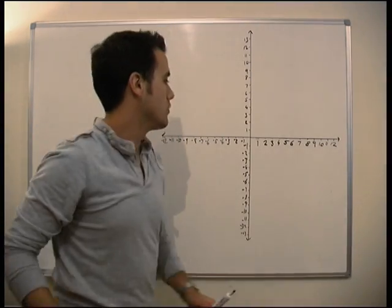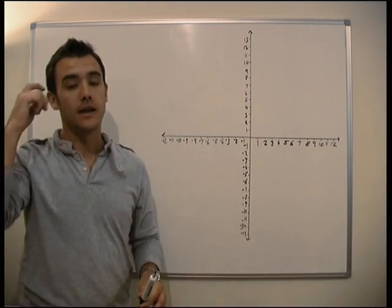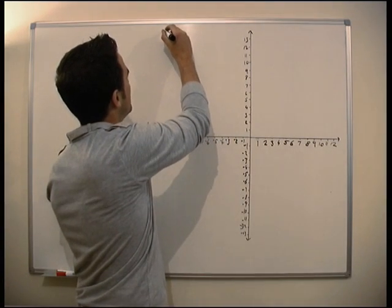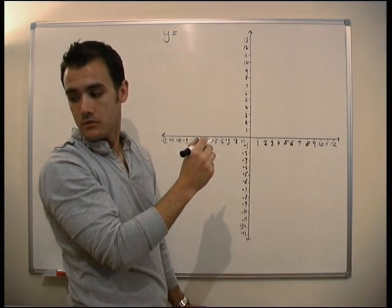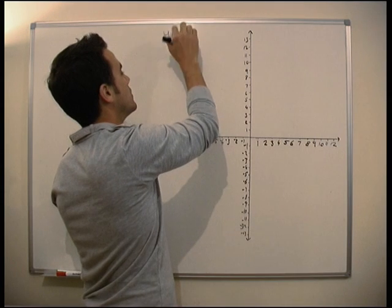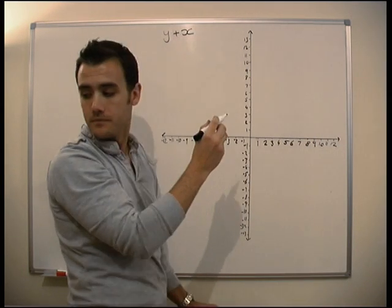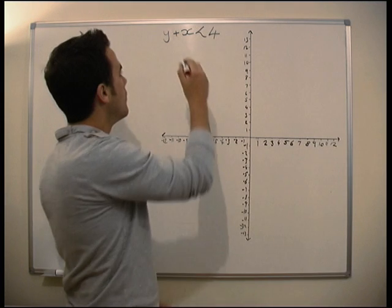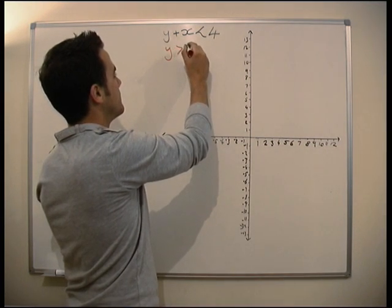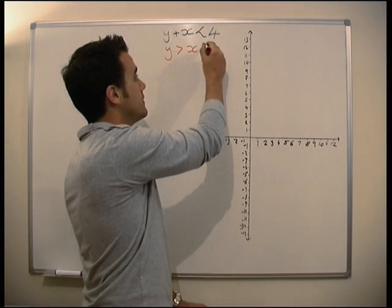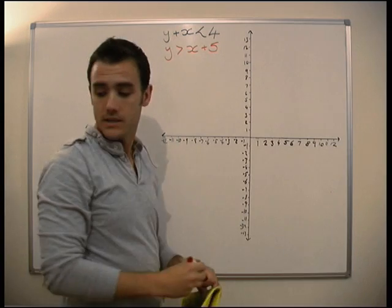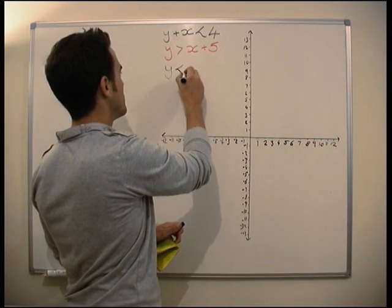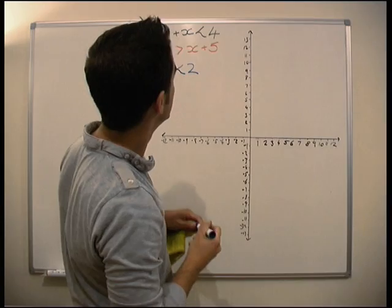So, basically we're going to be given a load of inequalities and we've got a shader region on our graph that will satisfy all of the inequalities. So, we're given y equals, not y equals, that would be ridiculous, y plus x is less than 4. That's our first one. y is greater than x plus 5. Okay? And y is greater than 2. So, we'd satisfy all these inequalities.